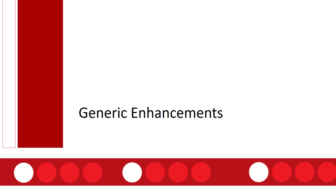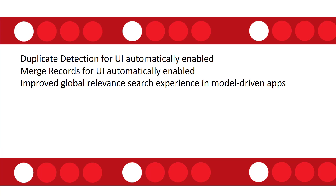Let's start with some of the generic enhancements in this release wave. There are a couple of settings that have changed — the duplicate detection experience and the merge records experience. Those were actually updated in October of 2020 and needed to be enabled by an administrator, but with this release they're going to be enabled by default. The updated experience for relevant search for model-driven apps, which added that search bar at the top of the screen, is also now going to be set as a default experience, if relevant search is turned on in that environment.